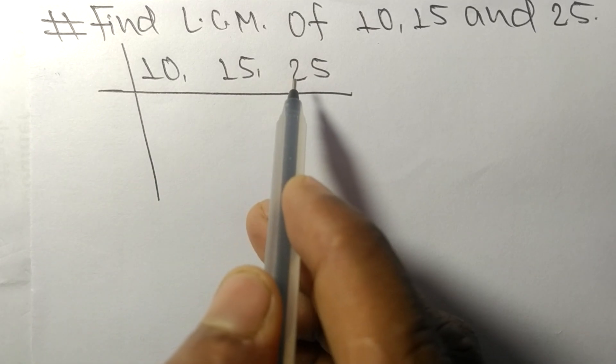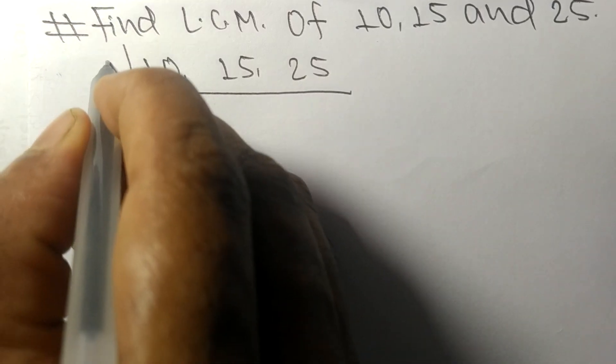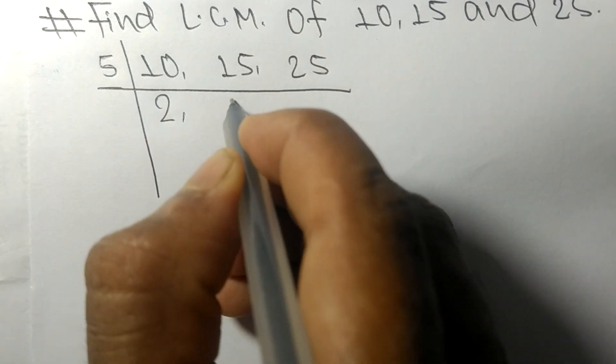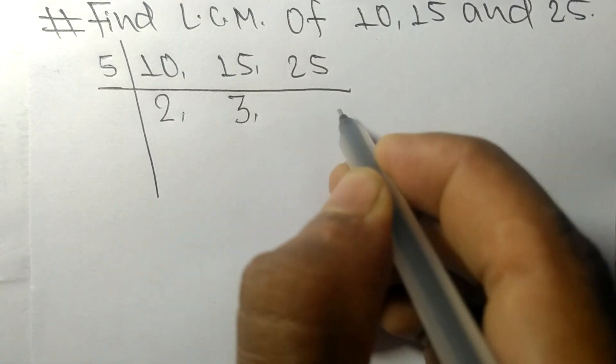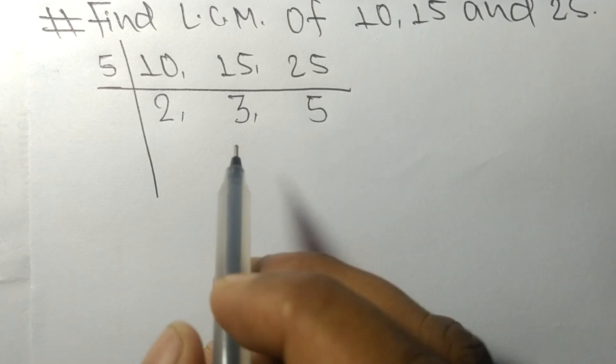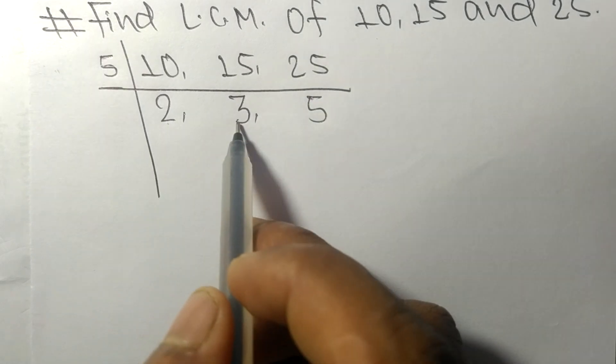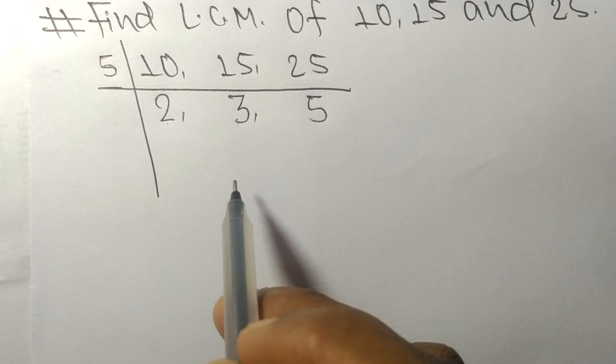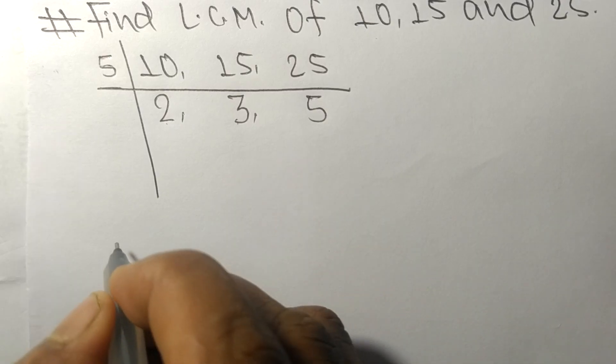These all numbers are exactly divisible by 5. 5 times 2 means 10, 5 times 3 means 15, 5 times 5 means 25. So now we got 2, 3, and 5, which are not exactly divisible by the same number, therefore...